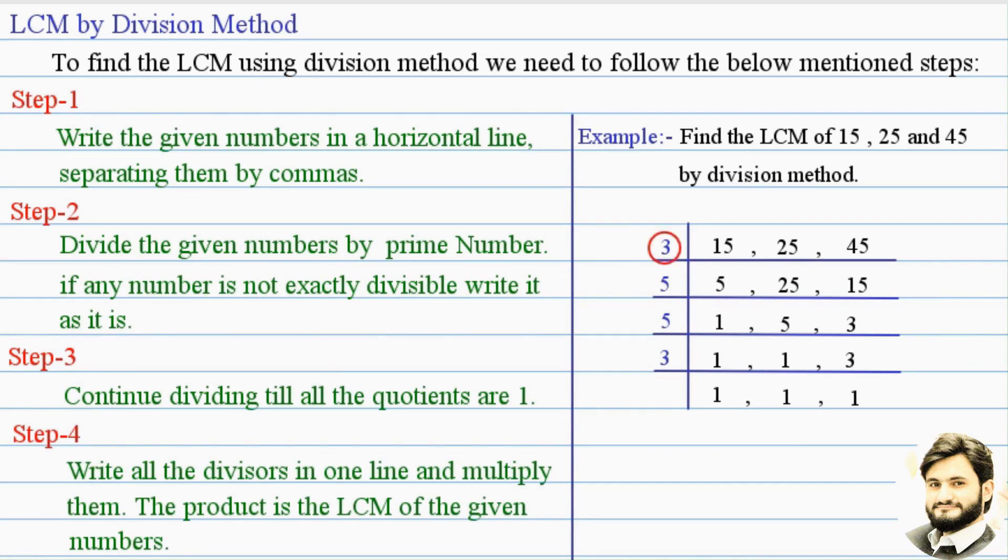5, 5, and 3. Now, we multiply these divisors. The result is called the LCM of 15, 25, and 45. Hence, LCM equal to 3 into 5 into 5 into 3, which is equal to 225.